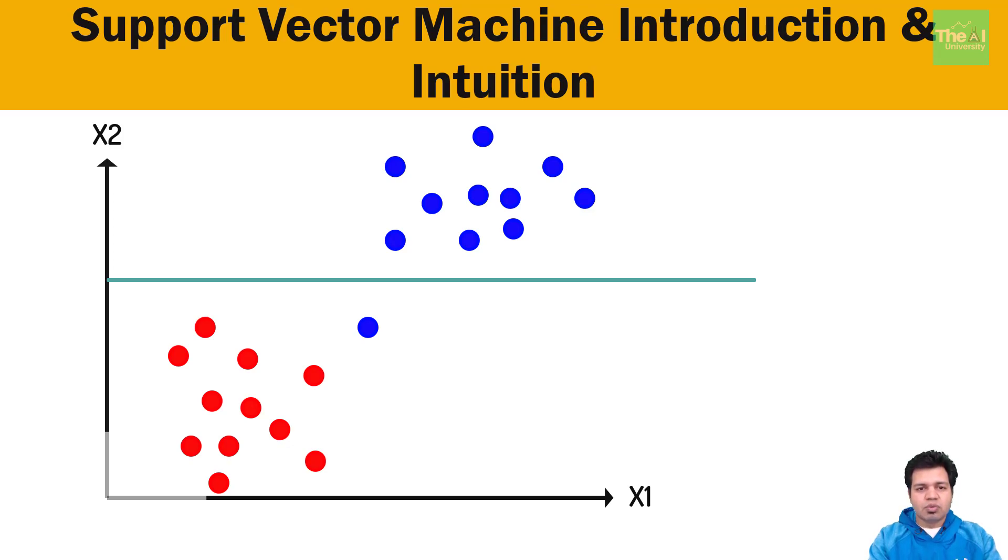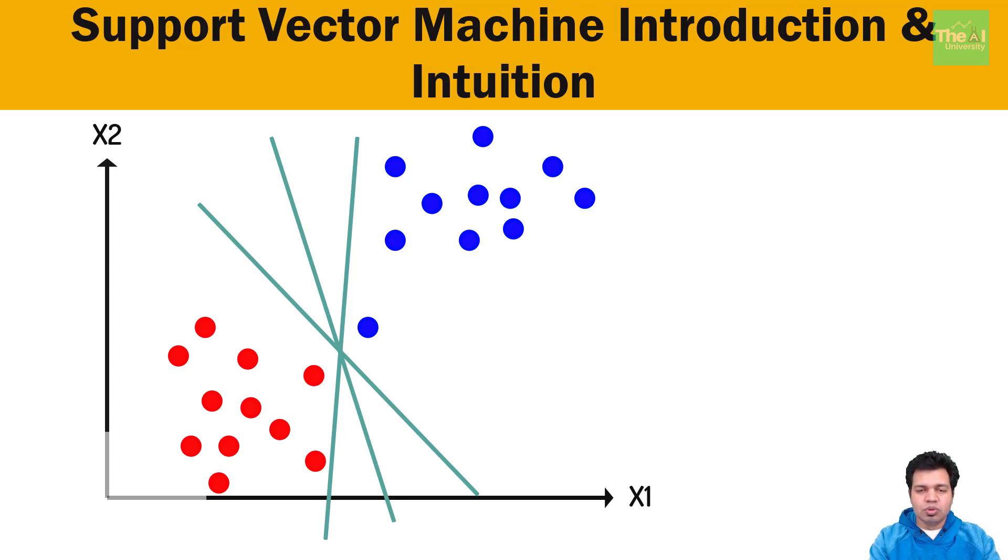Then we have another way to classify these classes by dropping a line at diagonal. In fact, we can drop various diagonal lines here to get the same result. The way we are dropping these lines can lead to different consequences. That is, based on the way we are drawing these lines, the future data point can either be regarded as red or blue. So this line is a class determining factor.